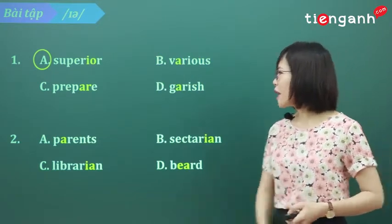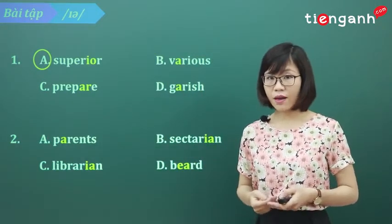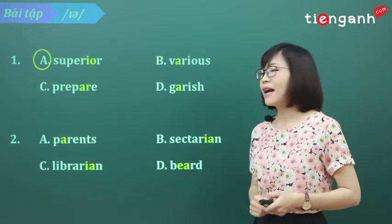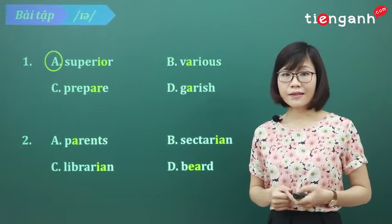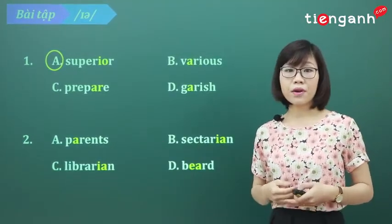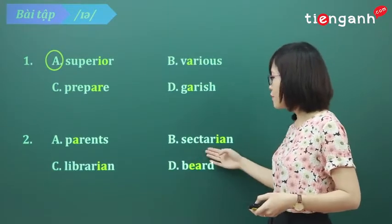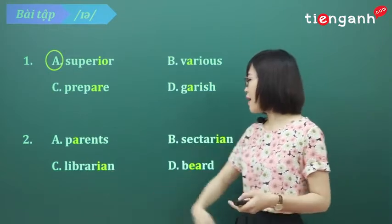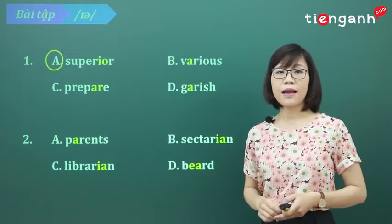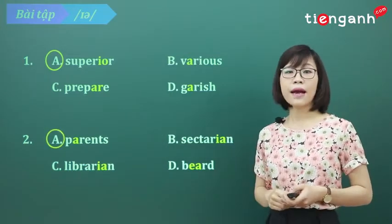Từ A của chúng ta phát âm là 'parents' — 'air'. Từ B phát âm là 'sectarian' — 'ear'. Từ C phát âm là 'librarian'. Và D phát âm là 'beard'. B, C và D của chúng ta đều phát âm là 'ear'. Chỉ riêng A phát âm là 'air' — 'parents'. Vì vậy A chính là từ phát âm khác 3 từ còn lại.